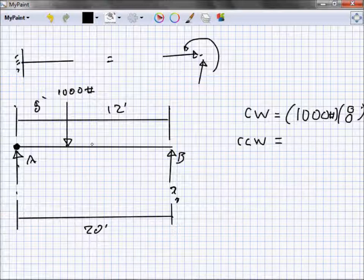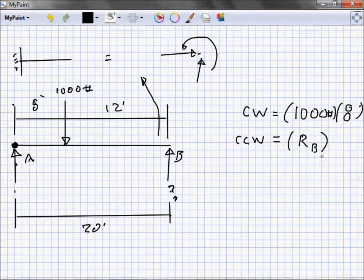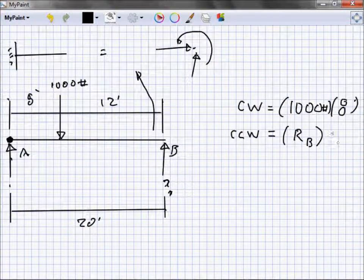Let's look at counterclockwise. What makes this beam want to spin that way? It's this reaction that we're looking for - we'll call it B or R sub B if you want, reaction at B, times what distance? 20 feet.